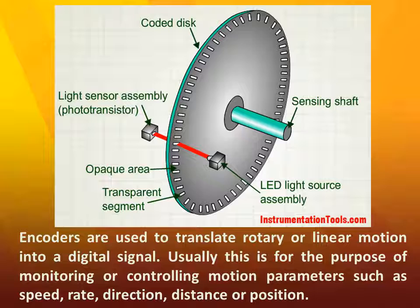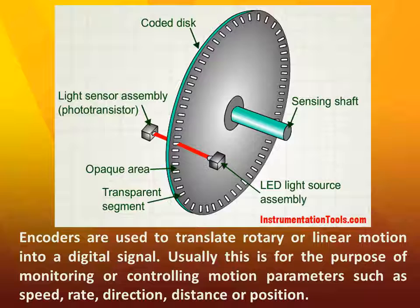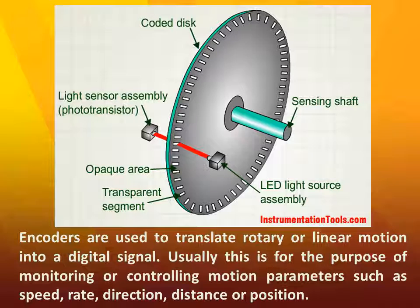Encoders are used to translate rotary or linear motion into a digital signal. Usually this is for the purpose of monitoring or controlling motion parameters such as speed, rate, direction, distance, or position.